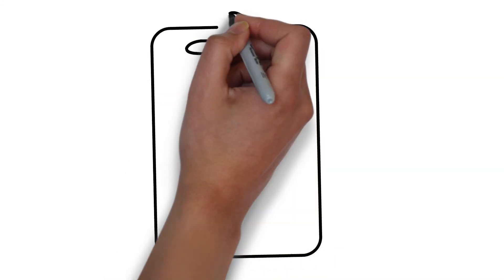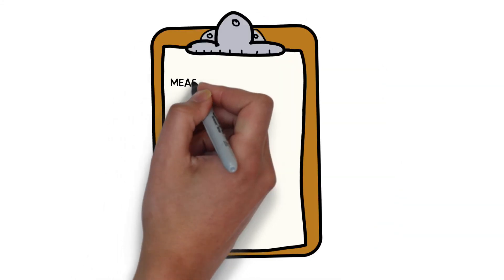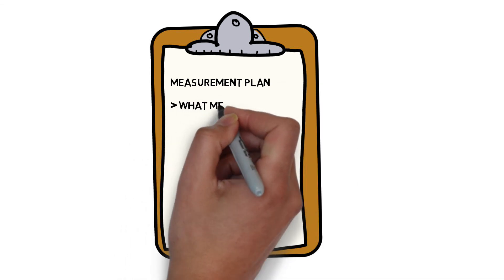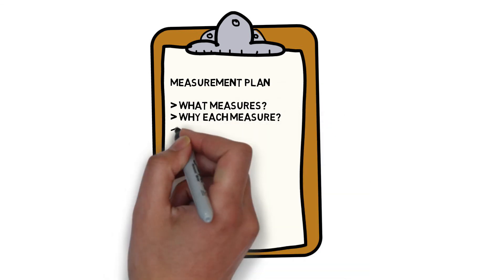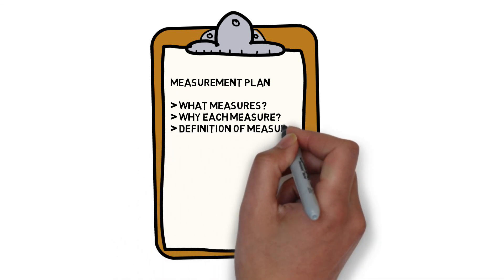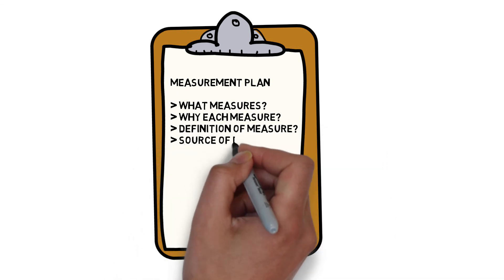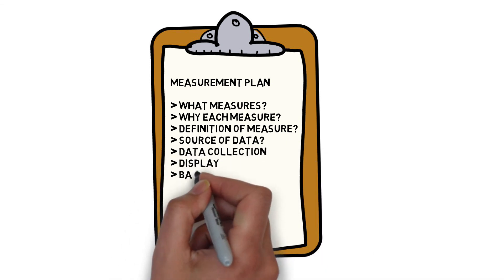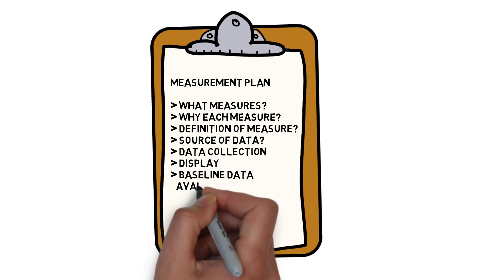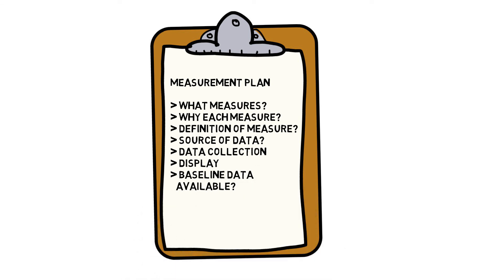Teams should create a measurement plan which provides details on the measures they will use, why each measure is required, the operational definition for each measure, the source of the data for each measure, the data collection process for each measure, how the measures will be displayed, and whether baseline data is available for the area of focus for improvement. If a team can provide these details for their measures, they will have created a solid measurement plan, which will support their quality journey and assist them in achieving their aims.